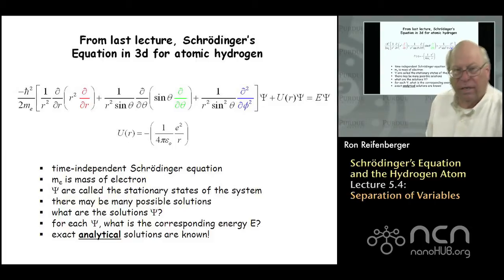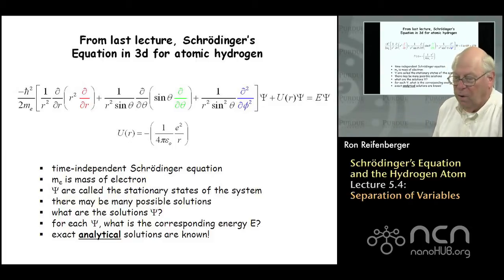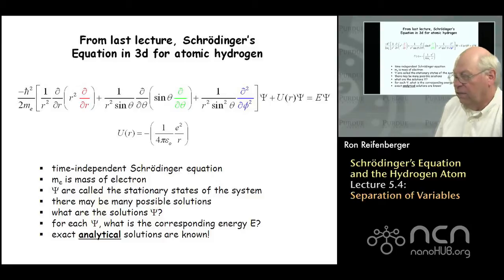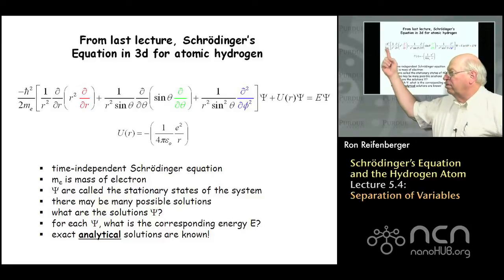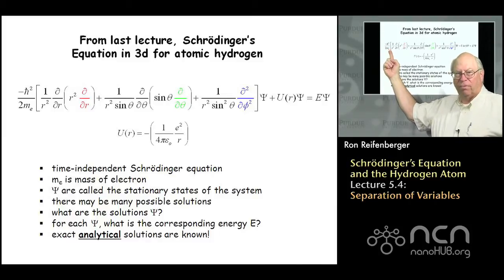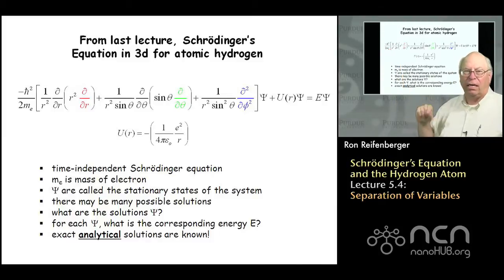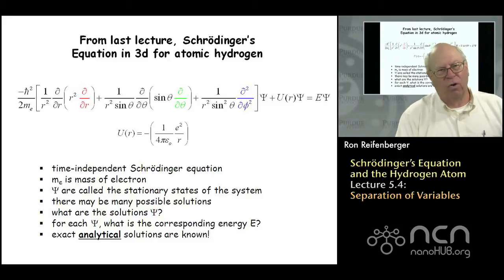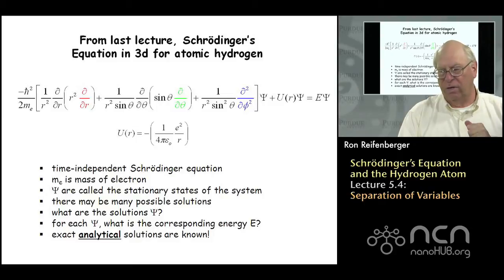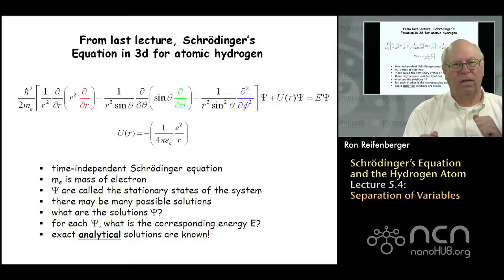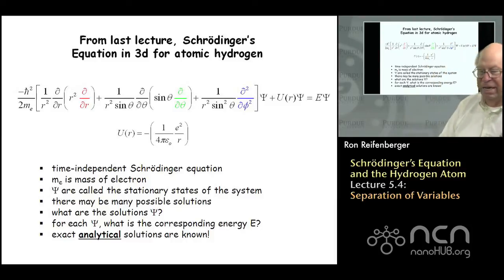There are a few things you should recognize from this equation based on our previous discussions. First, time does not appear in that equation, so it's the time-independent Schrödinger equation. The reason you know we're talking about electrons is we put in the mass of the electron, subscripted with a small e. We do that because we're going to have another quantum number called small m, and we need to distinguish between the mass and that quantum number.